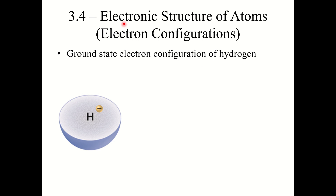Section 3.4, electronic structure of atoms. Here we're going to take our knowledge from the previous section and put it to use by looking at the periodic table and describing the ground state electron configuration of electrons.